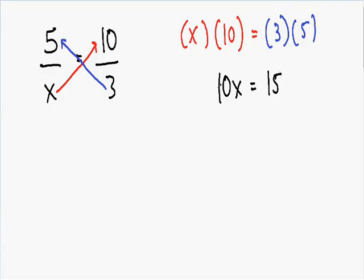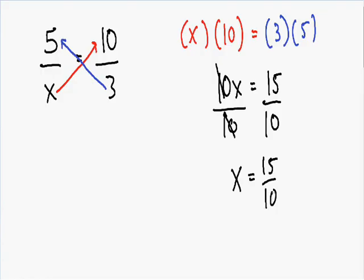Now we need to get x by itself. Since 10 is being multiplied by x, we divide both sides by 10. The 10s cancel on the left, leaving x. On the right we have 15 over 10, which can be reduced — both numbers divide evenly by 5. 15 divided by 5 is 3, and 10 divided by 5 is 2. So our final answer is x equals 3 over 2.